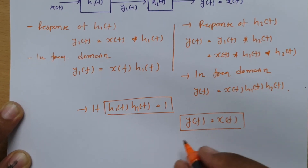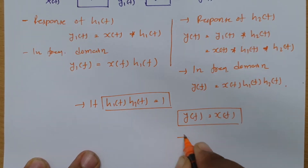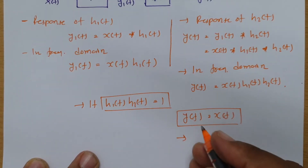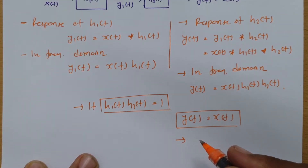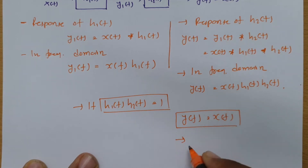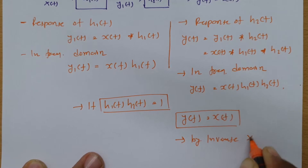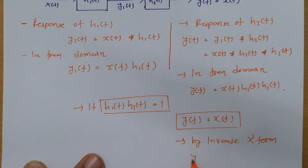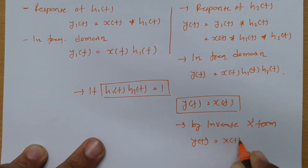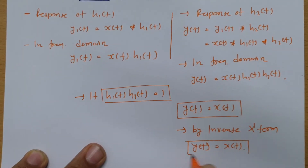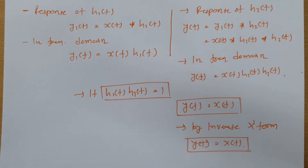And if you take the inverse transform of this — it could be the inverse Laplace transform, the inverse Z-transform, or the inverse Fourier transform — by applying the inverse transform we can have y(t) equal to x(t). And if that is happening, then we can say the given system is an invertible system.